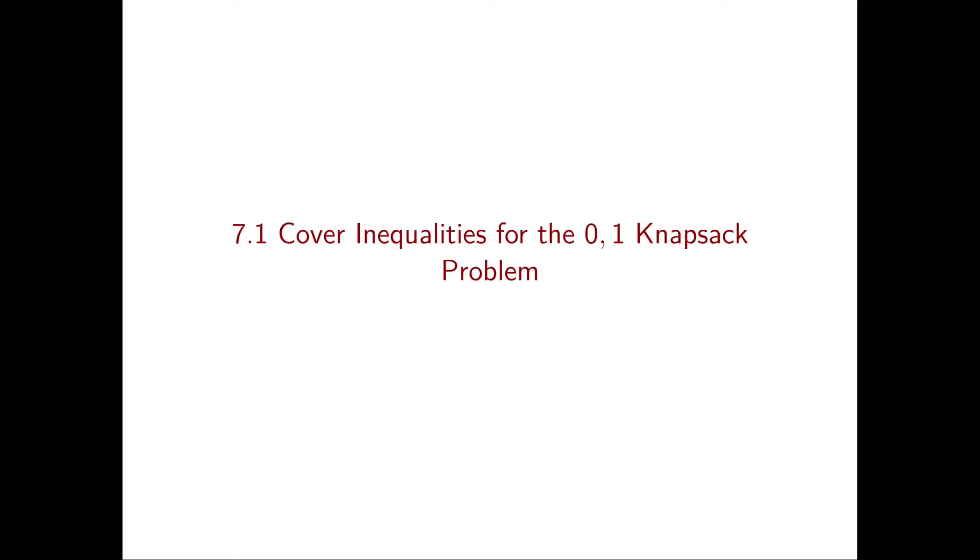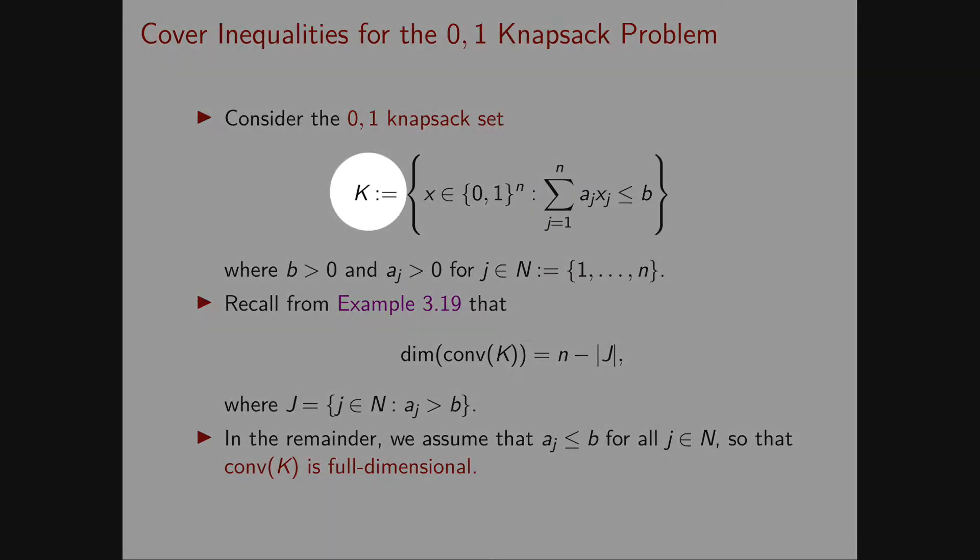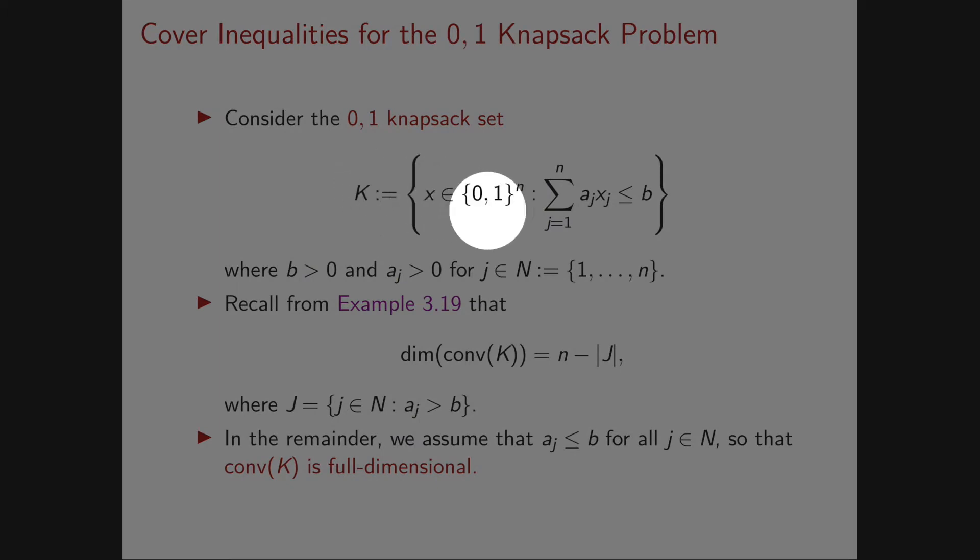To warm up, we will talk about cover inequalities for the 0-1 knapsack problem. We have already seen the 0-1 knapsack set K, defined as the set of binary points that satisfy just one inequality: sum of aⱼxⱼ less than or equal to b.